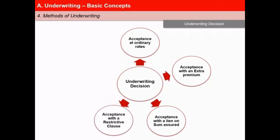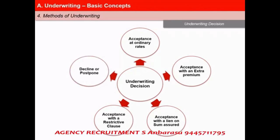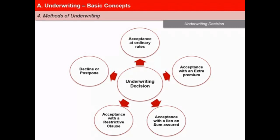Fourth, acceptance with a restrictive clause. For certain kinds of hazards, a restrictive clause may be applied which limits death benefit in the event of death under certain circumstances. And fifth, decline or postpone. A life insurance underwriter may decide to decline a proposal for insurance, which generally happens when there are certain features so adverse that they considerably magnify the incidence of the risk.